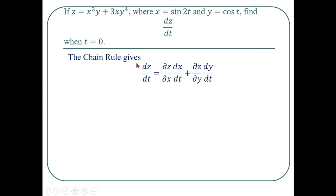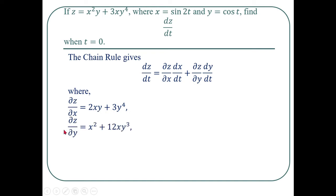By case one of the chain rule, dz/dt = (∂z/∂x)(dx/dt) + (∂z/∂y)(dy/dt). Differentiating partially with respect to x: ∂z/∂x = 2xy + 3y⁴. Differentiating partially with respect to y: ∂z/∂y = x⁴ + 12xy³. Also, dx/dt = 2cos(2t) and dy/dt = −sin(t).